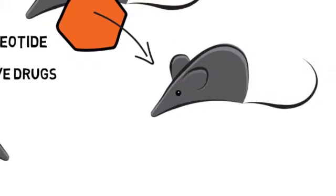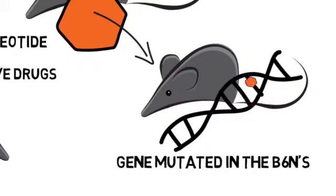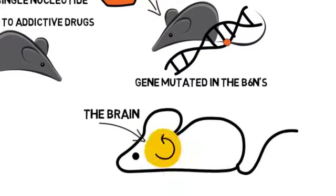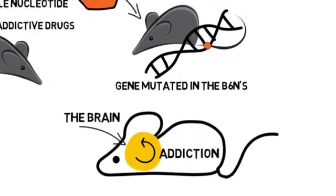This gene that's mutated in the BL/6Ns controls neuronal structure, and specifically structure in the nucleus accumbens, a region of the brain that is fundamentally important in addiction.